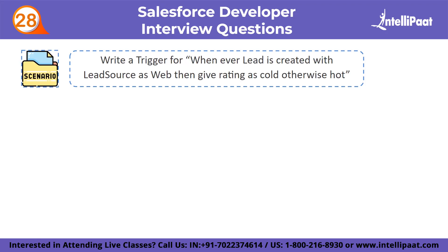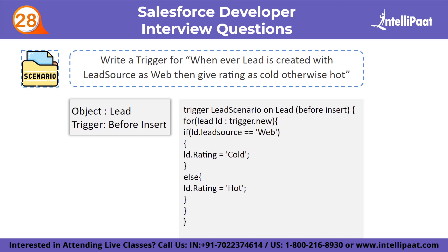Next question: write a trigger for whenever a lead is created with lead source as web, then give rating as cold, otherwise hot. Consider the object as lead and the type of trigger as before insert. Trigger is a predefined keyword and the trigger name is used for the lead object with a before insert operation. We apply a for loop on the lead object to check whether the lead source equals web. If it is correct, the rating equals cold, otherwise it equals hot.